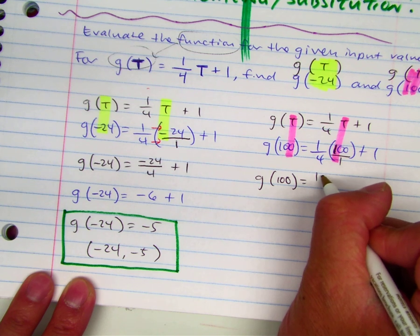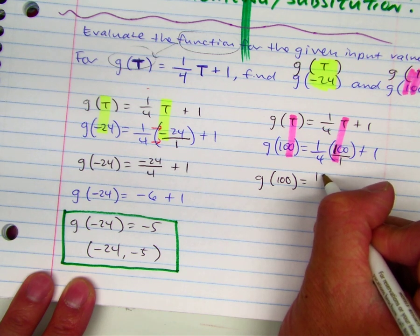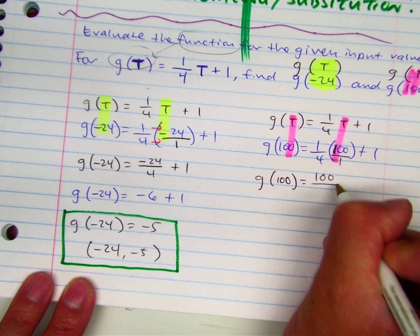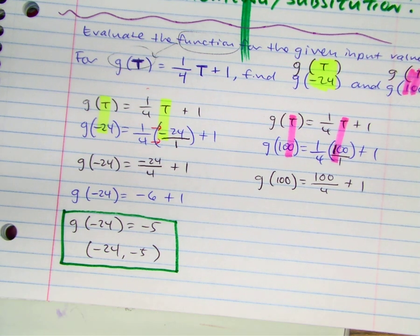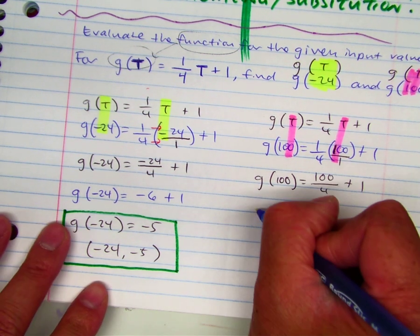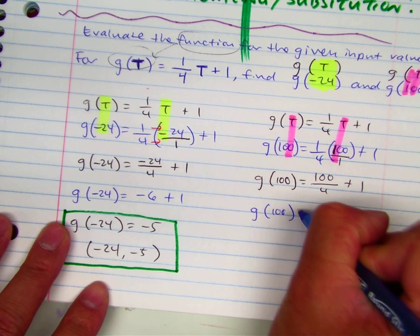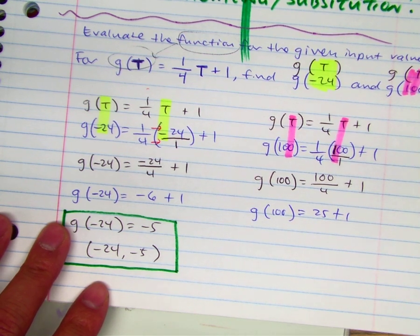What's in my numerator? 100 over 4. 100 divided by 4 is 25. 25 plus 1 is 26.